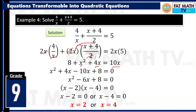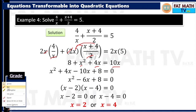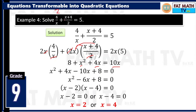Check with the original equation. If x is 2: 4 over 2 is 2, plus 2 plus 4 is 6 over 2 is 3. So 2 plus 3 is indeed 5 — x equals 2 is correct. If x is 4: 4 over 4 is 1, plus 4 plus 4 is 8 divided by 2 is 4. So 1 plus 4 is indeed 5. x equals 4 is another solution. So the solution set is 2 and 4.